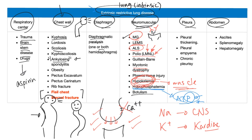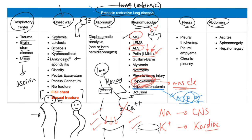Botulism occurs in kids who consume honey and in adults who eat improperly stored canned food contaminated by anaerobic bacteria. Even one milligram of botulinum toxin can be lethal, but heating the food thoroughly will kill the bacteria. Pleural causes include pleural thickening, pleural empyema, and chronic pleurisy. Abdominal causes include ascites and organomegaly.